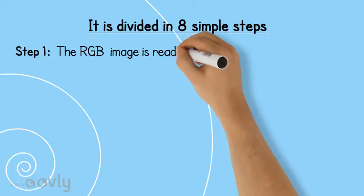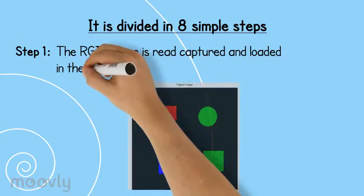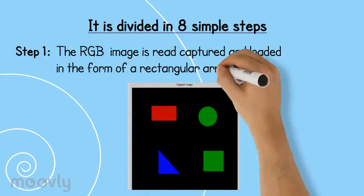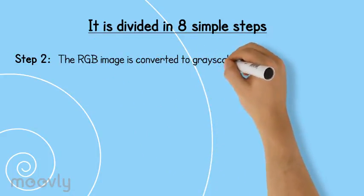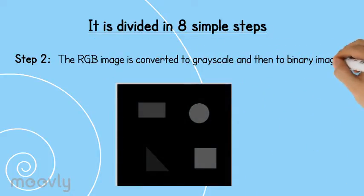Step 1. The red-green-blue image is read, captured and loaded in the form of a rectangular array. Step 2. The RGB image is converted to grayscale and then to binary image.